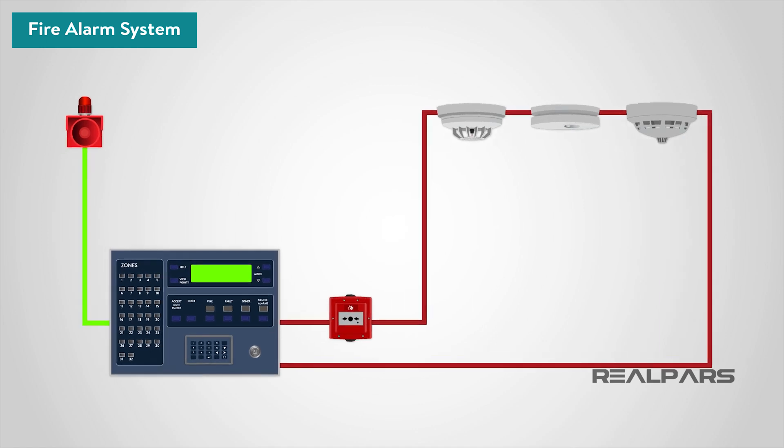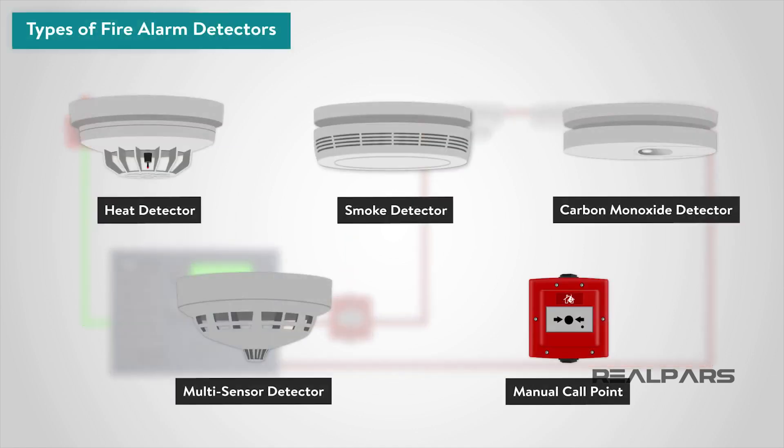At the core of a fire alarm system are the detection devices, from sophisticated intelligent smoke detectors to simple manually operated break glass units. There are a wide array of different types, but we can divide them into groups including heat detectors, smoke detectors, carbon monoxide detectors, multi-sensor detectors, and manual call points.